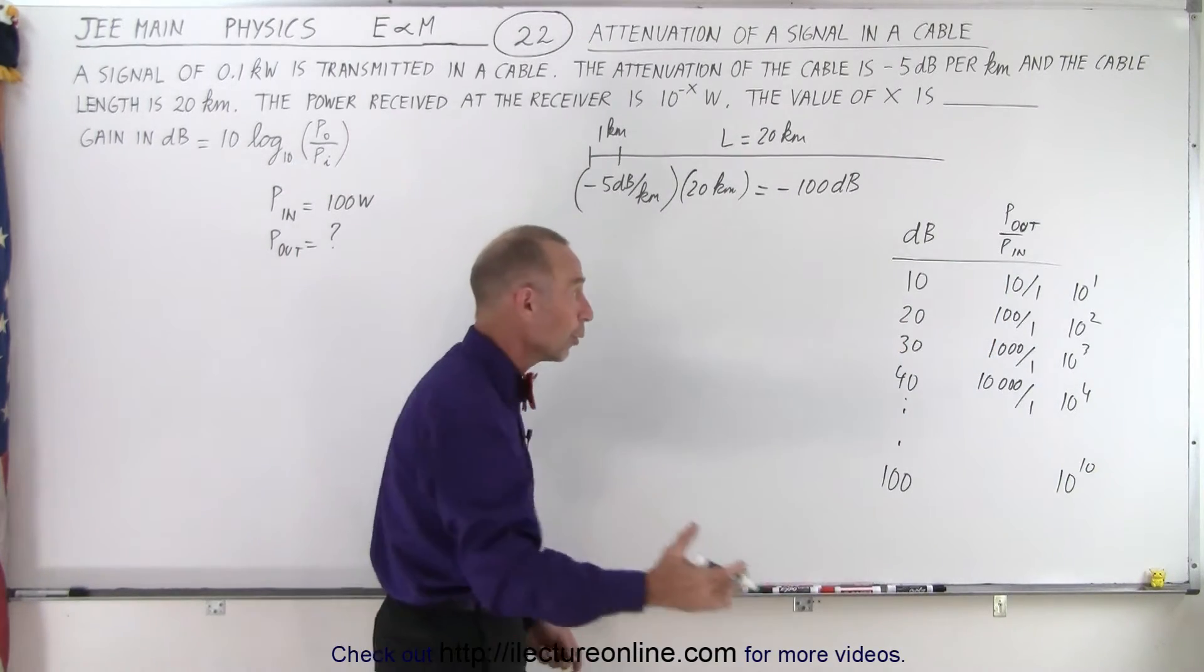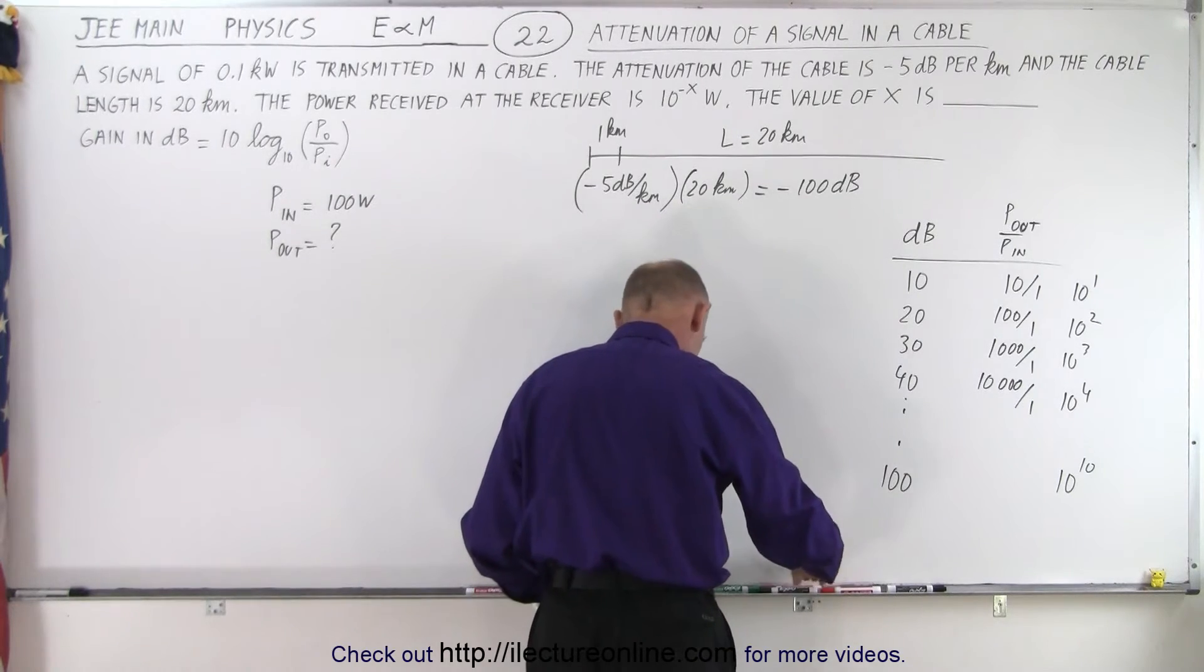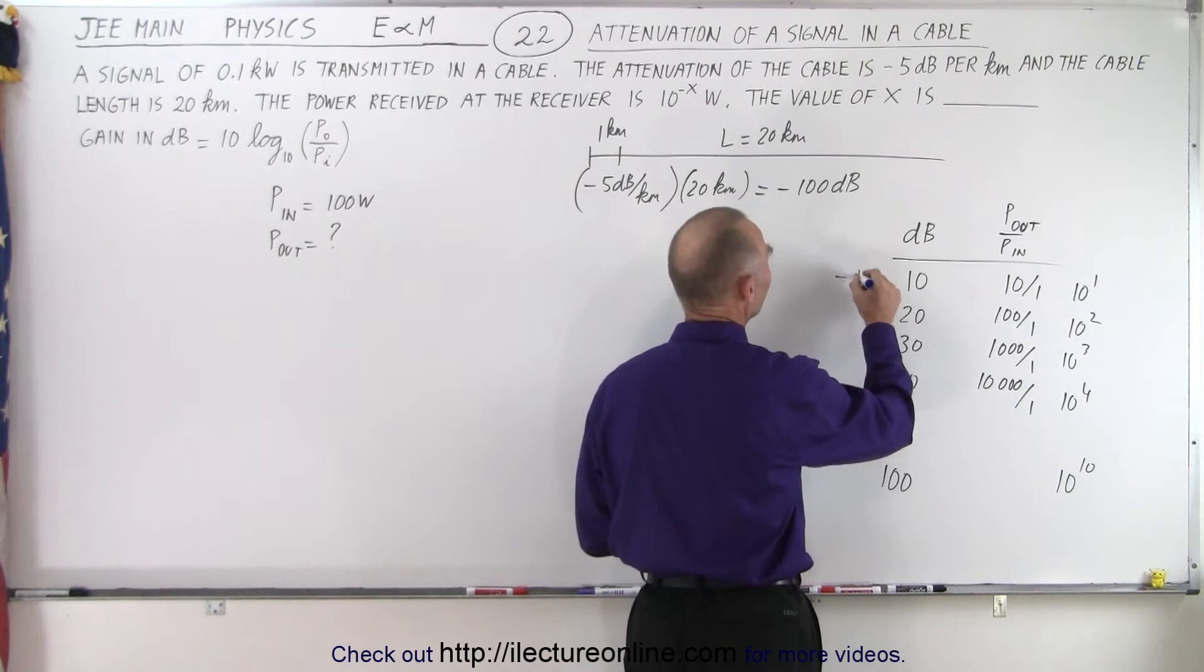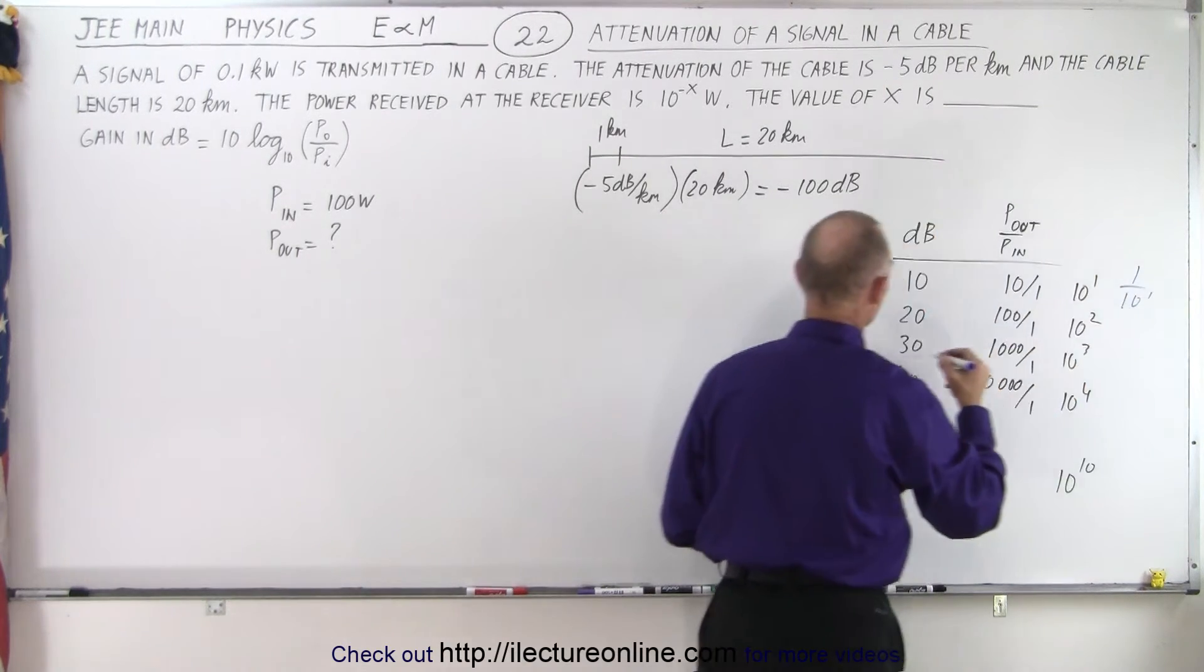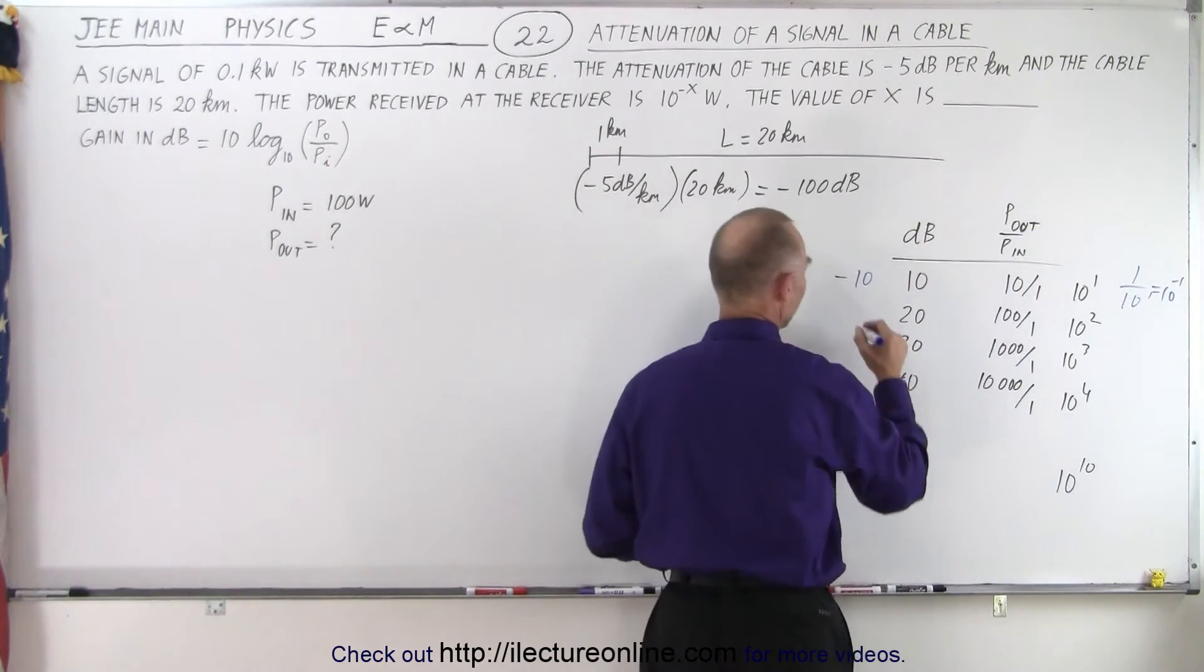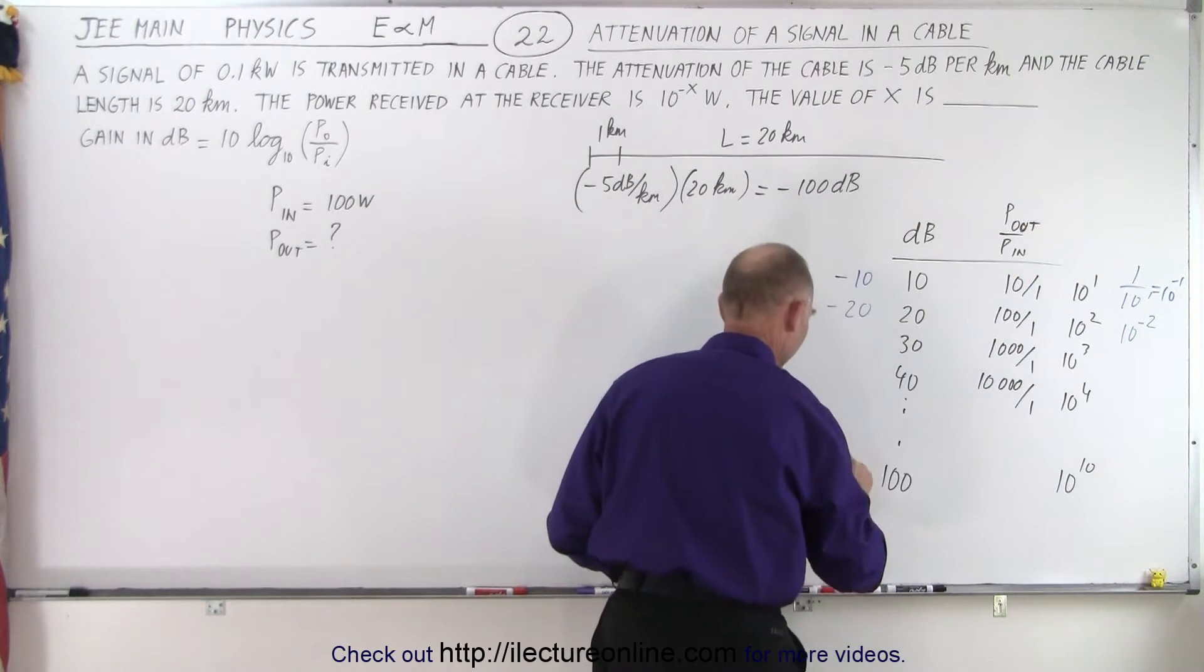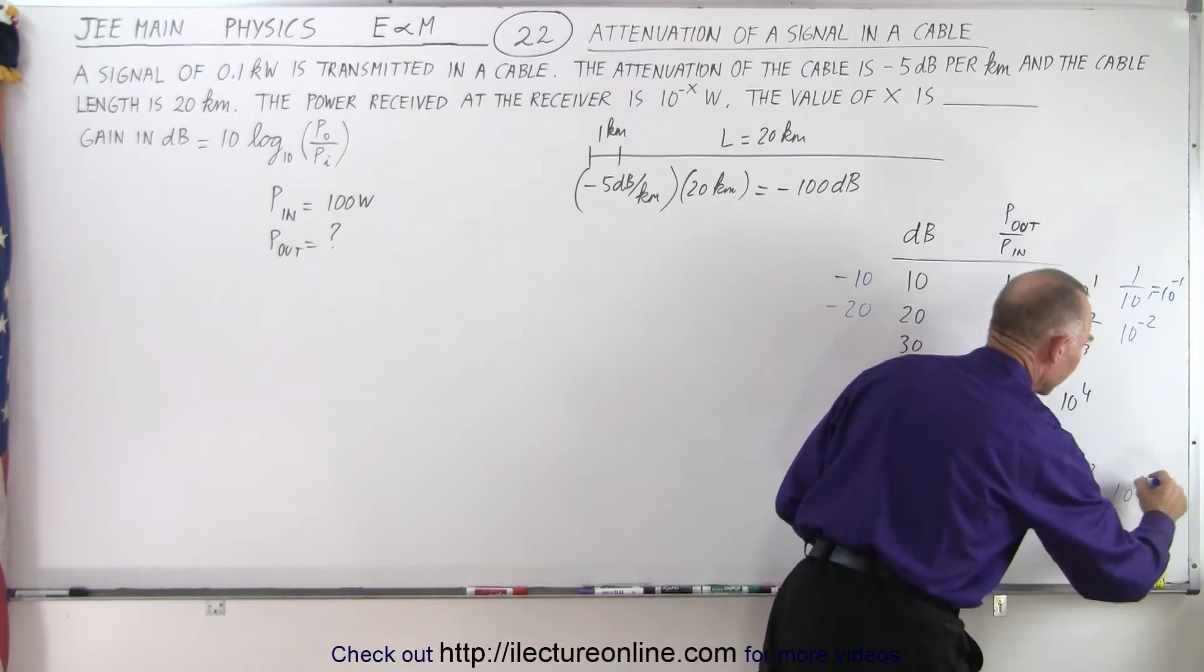Now in reverse, if we go negative - let me use a different color. If it's -10 dB then here we have 1 over 10^1 or 10^(-1). If you have -20 dB then this becomes 10^(-2) and if we have -100 dB we get 10^(-10).